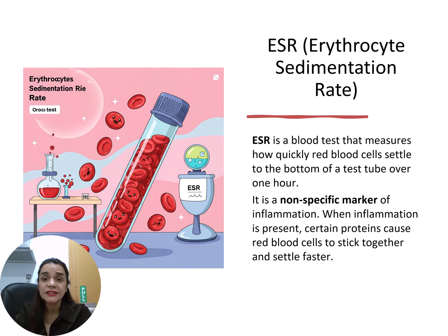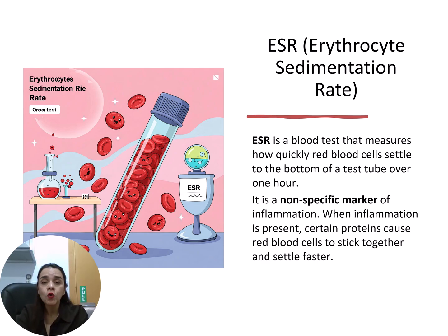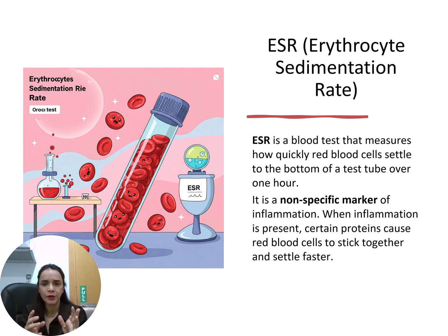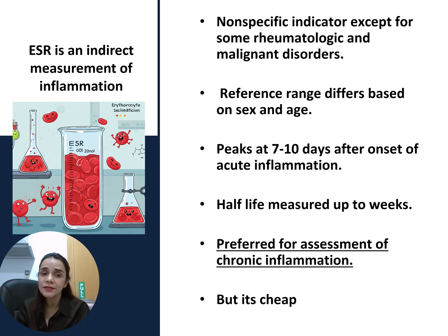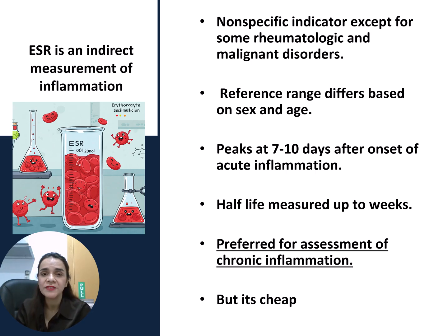What is ESR? ESR is Erythrocyte Sedimentation Rate. It means how quickly red blood cells settle to the bottom of a test tube over an hour. This is a non-specific marker. When inflammation exists in the body, certain proteins in the blood cause RBCs to stick together and settle faster. That means ESR will be high. ESR is an indirect measurement of inflammation. It is non-specific.